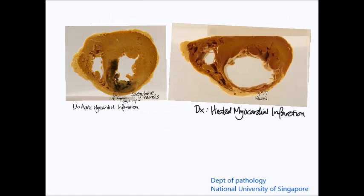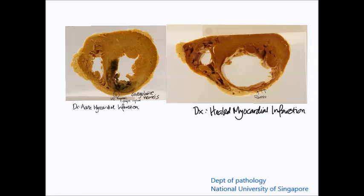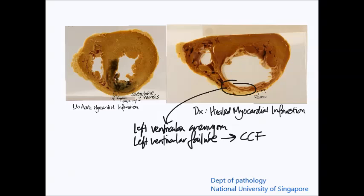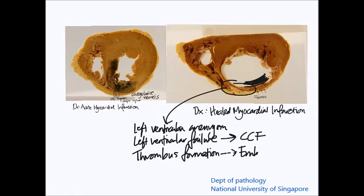What are some of the complications or consequences of healed myocardial infarction if the patient initially survives the acute event? Because the wall of the ventricle is so thinned, the patient may be prone to left ventricular aneurysm formation, which in turn can predispose the heart to rupture and cardiac tamponade as well as thrombosis. Other complications include left ventricular failure, which can eventually lead to congestive cardiac failure, and also formation of thrombi in the damaged ventricular wall with a concurrent risk of embolism.